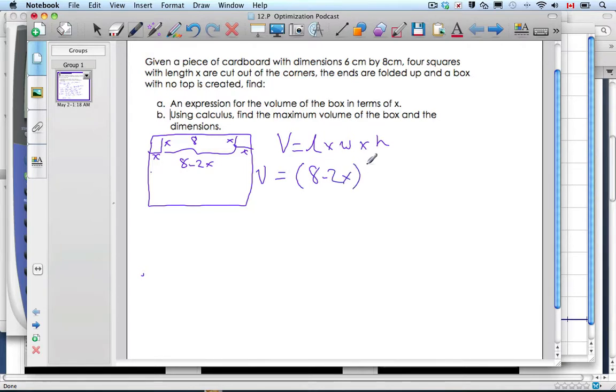Now we have to find the width. Well if I look, cut out the corner here this was the 6, cutting out the x, this would be the width which is 6 minus the 2x. Same process, 6 minus 2x, now times it by the height is just x and so here is our volume.